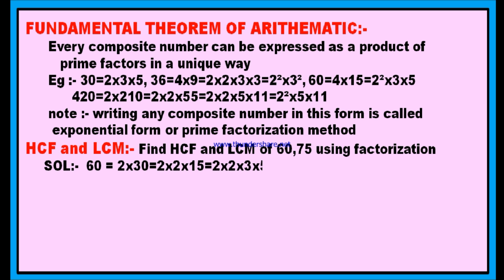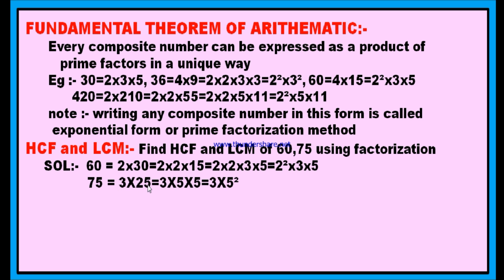Here is a solution. First of all, write 60 as the product of prime factors. 60 is nothing but 2 into 30. Again, 2 into 2 into 15. Again, 15 is 3 into 5. Therefore, 60 is 2 square into 3 into 5. And the second number is 75. 75 can be written as 3 into 25. This 25 can be written as 5 into 5. Therefore, finally, 75 is equal to 3 into 5 square.